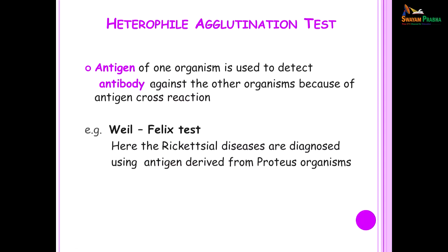The heterophil agglutination test is another tube agglutination test, but here one organism is used to detect the antibody against another organism because of antigen cross-reaction. The Weil-Felix test is a good example — rickettsial diseases are diagnosed using antigen derived from Proteus species. This is because the rickettsial antigens and the Proteus antigens are similar, and the antibodies produced against the rickettsial disease will react with the Proteus antigen.